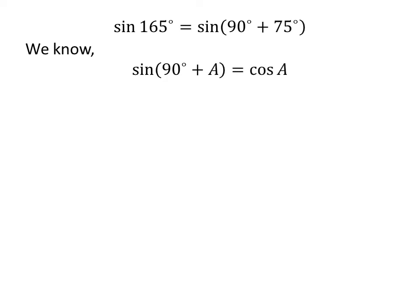We know the trigonometry identity: sine of 90 degrees plus A is equal to cosine of A. The proof of this trigonometry identity is explained in the video appearing in the upper right corner of this video. The link of the video is also given in the description section.